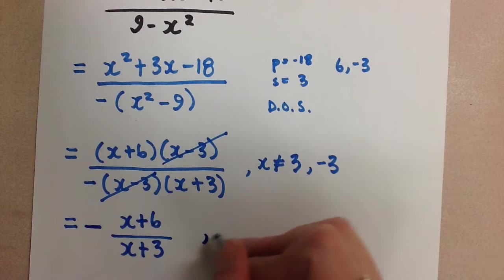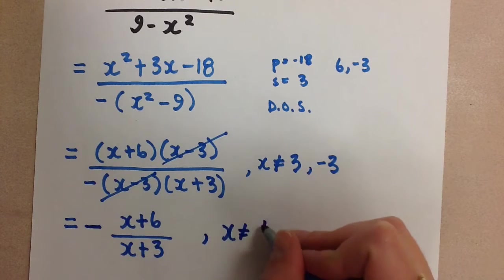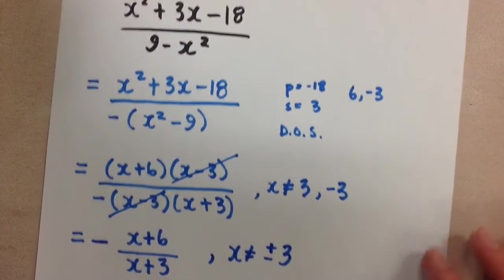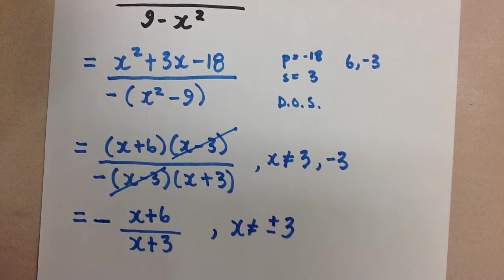And then our restrictions for the final answer, x can't be equal to positive or negative 3. And now we have our simplified rational expression. Thanks for watching. Mrs. A loves math.